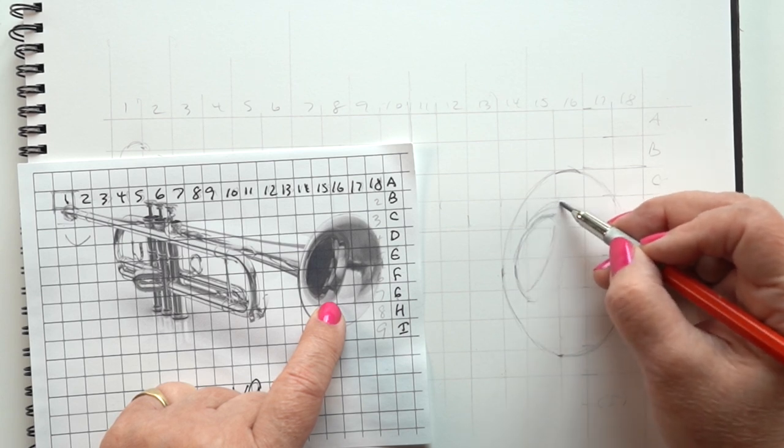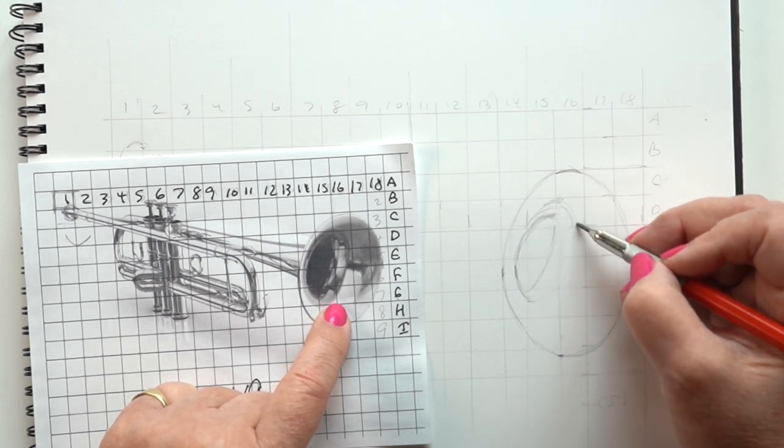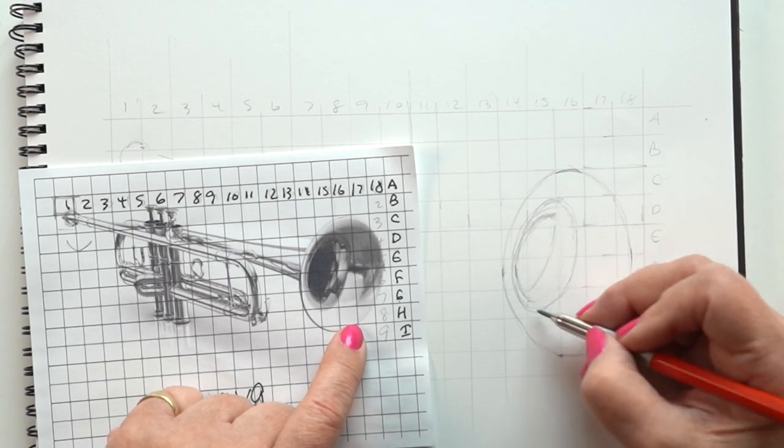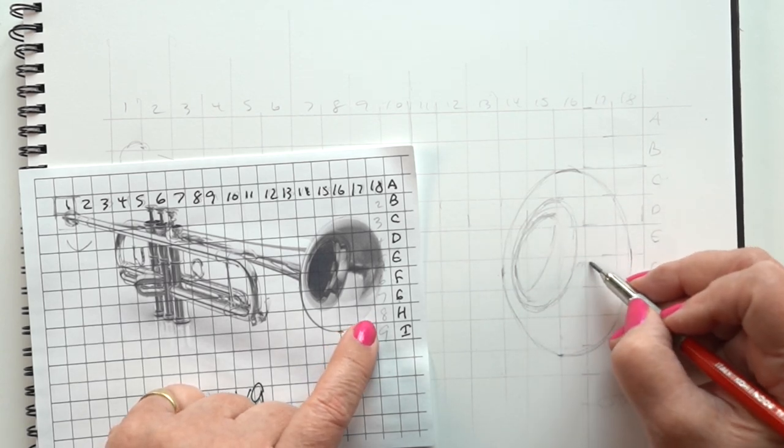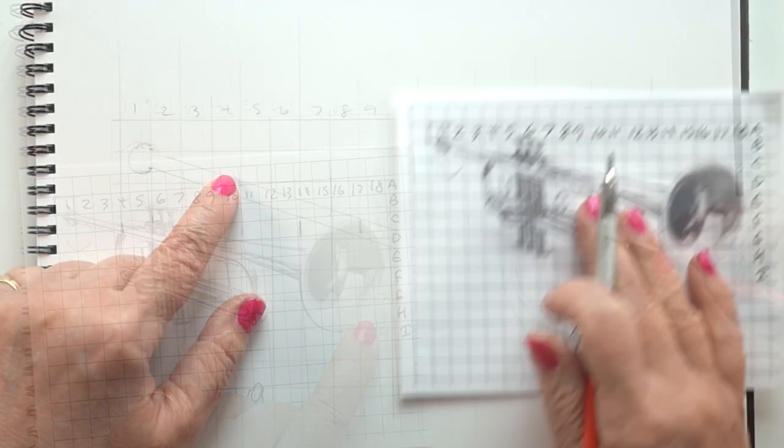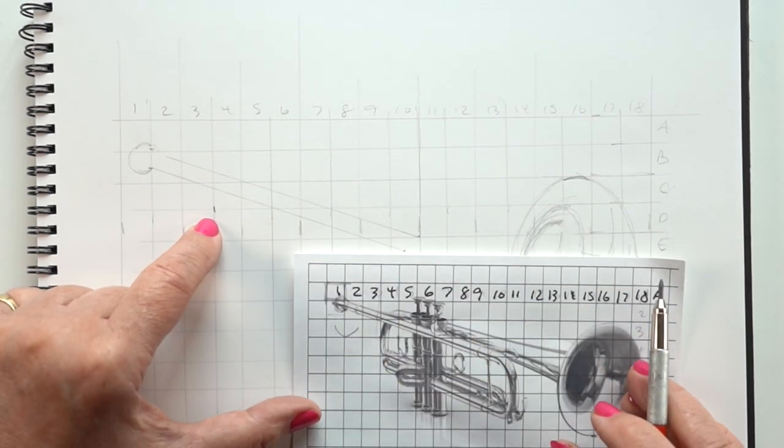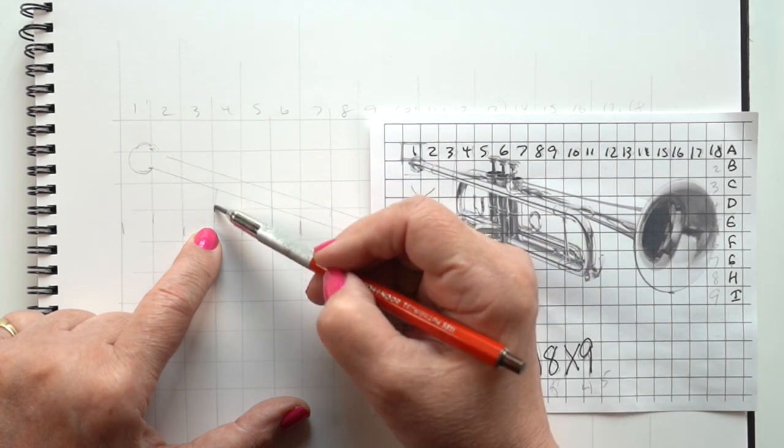And, you know, I will turn you loose to let you do as much or as little as you need to in order to create the drawing that you're looking for. When you're all done, you can ink it, you can color it with markers, you can watercolor it, whatever you're going to do. Just erase those lines and you're good to go.